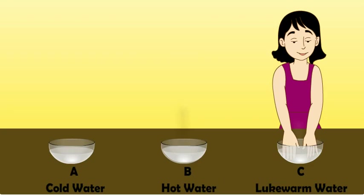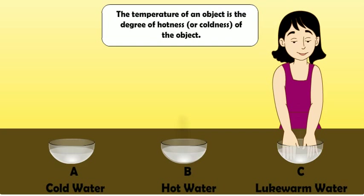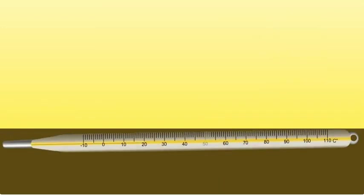A hot object has a high temperature whereas a cold object has a lower temperature. The temperature of an object is the degree of hotness or coldness of the object.